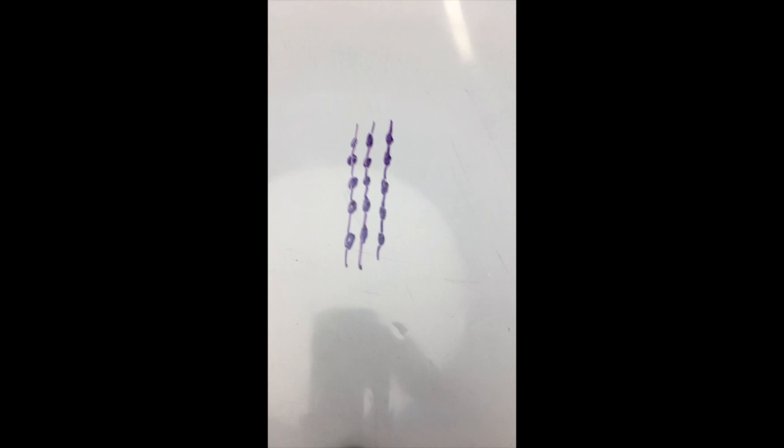For example, gram-positive bacteria have an inherent resistance to the antibiotic colistin because it cannot penetrate the thick peptidoglycan layer of their membrane. Most other resistance is developed as the result of a mutation.